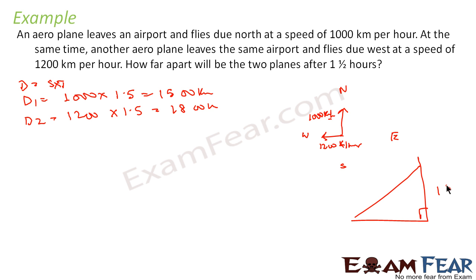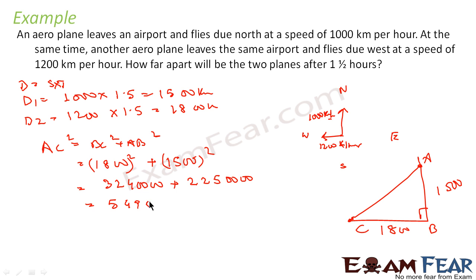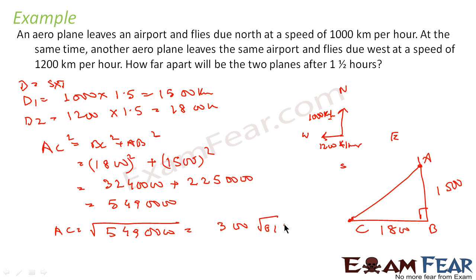One side is 1500 km and the other is 1800 km. The question is: how far apart are the two aeroplanes? For triangle ABC, AC² = BC² + AB² = 1800² + 1500² = 3,240,000 + 2,250,000 = 5,490,000. So AC = √5,490,000 = 300√61 km. That is the distance between both aeroplanes.